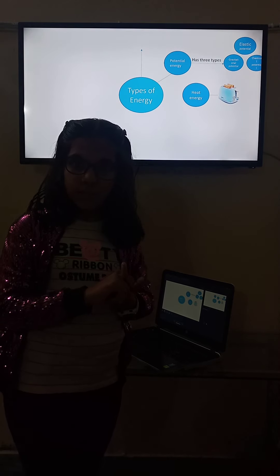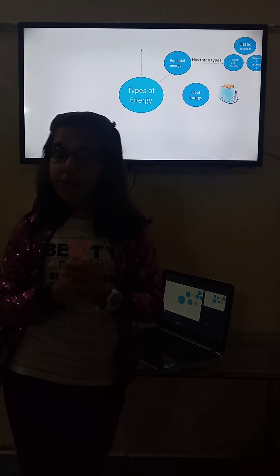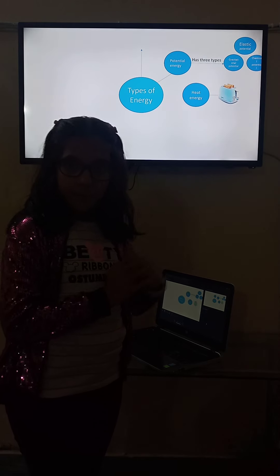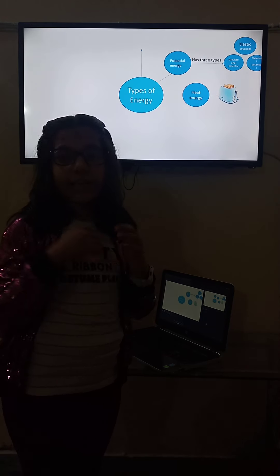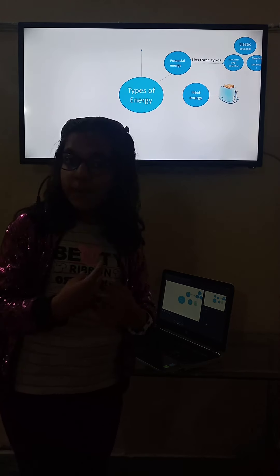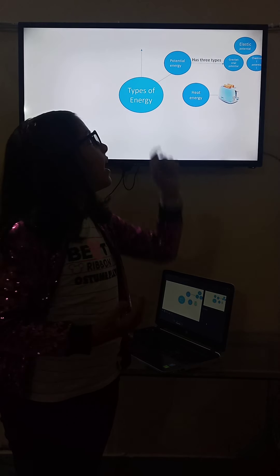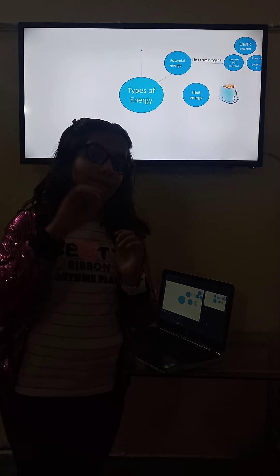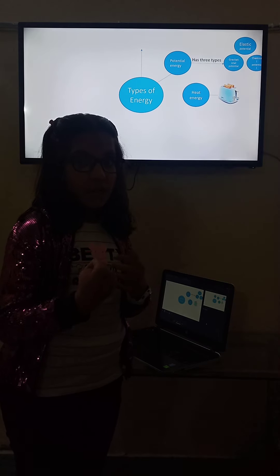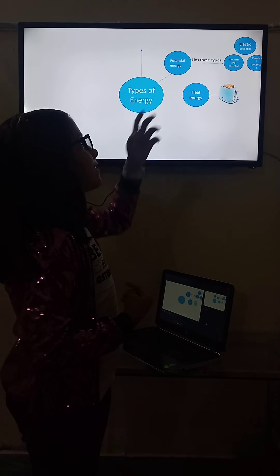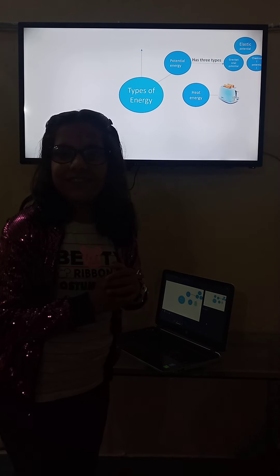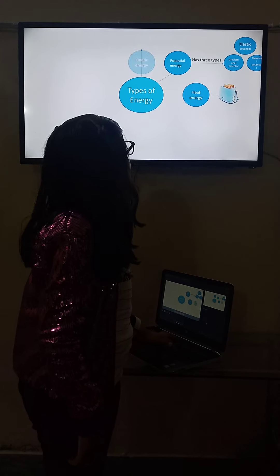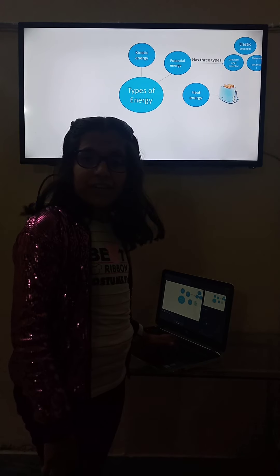First, gravitational potential energy — the higher we are above the ground, the more gravitational potential energy we have. Chemical potential energy includes the food we eat and the batteries we use. And in elastic potential energy, when a spring is stretched or compressed, it carries elastic potential energy.